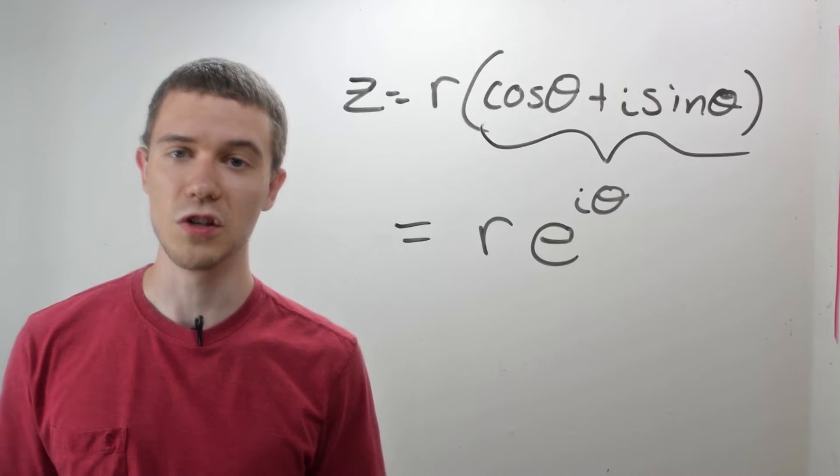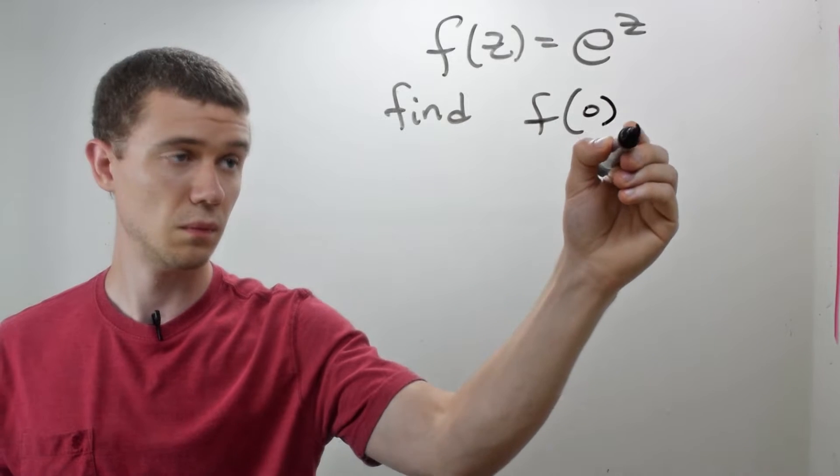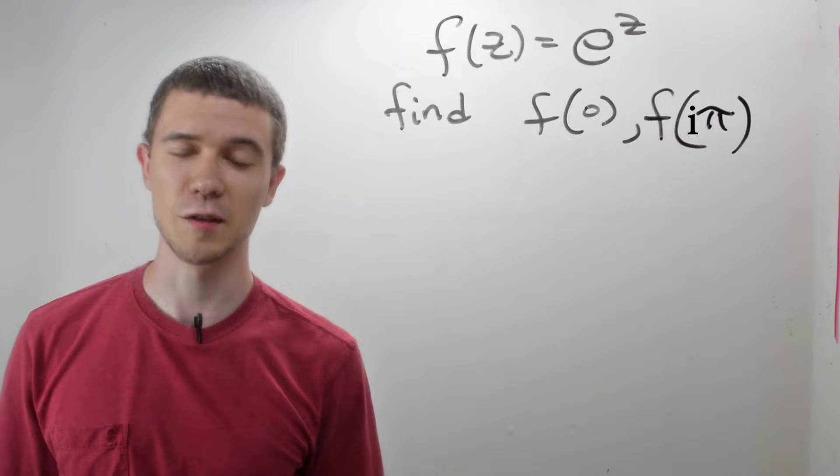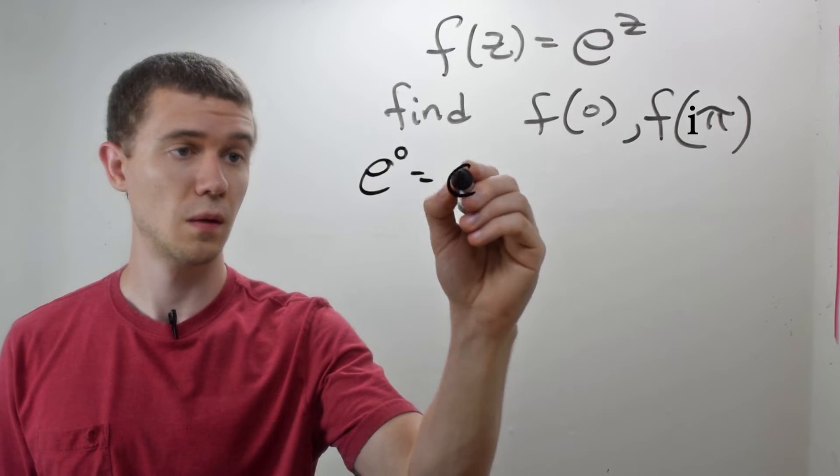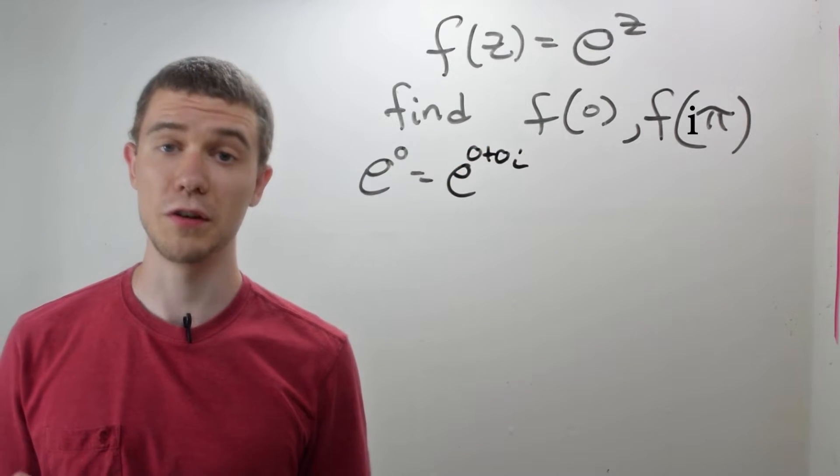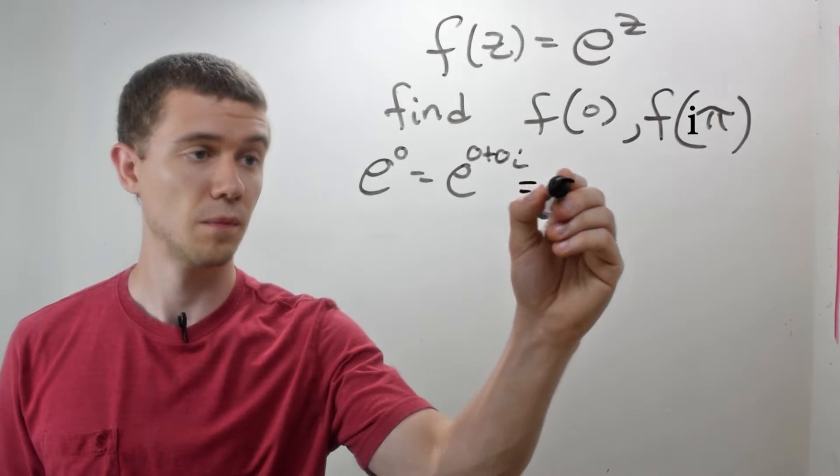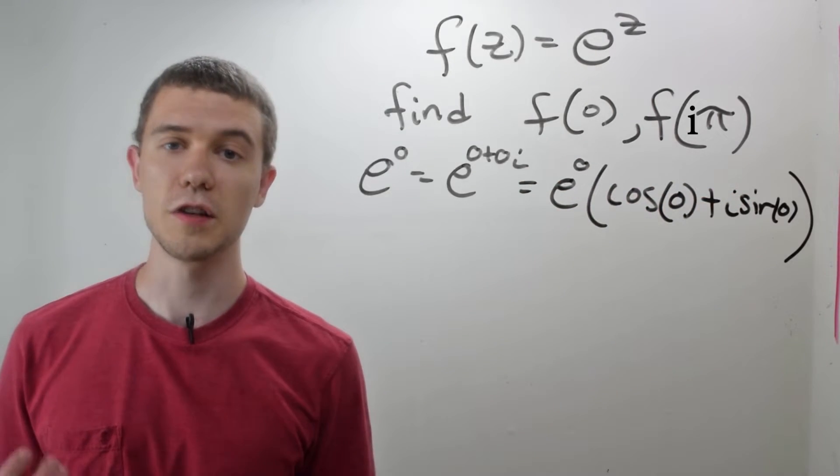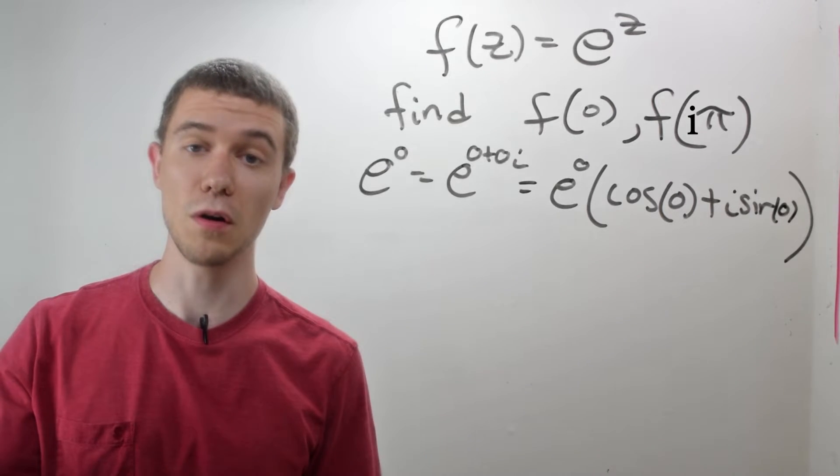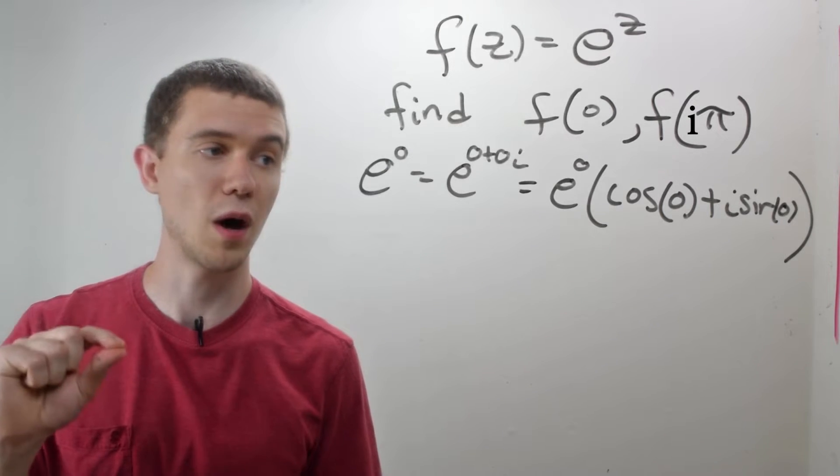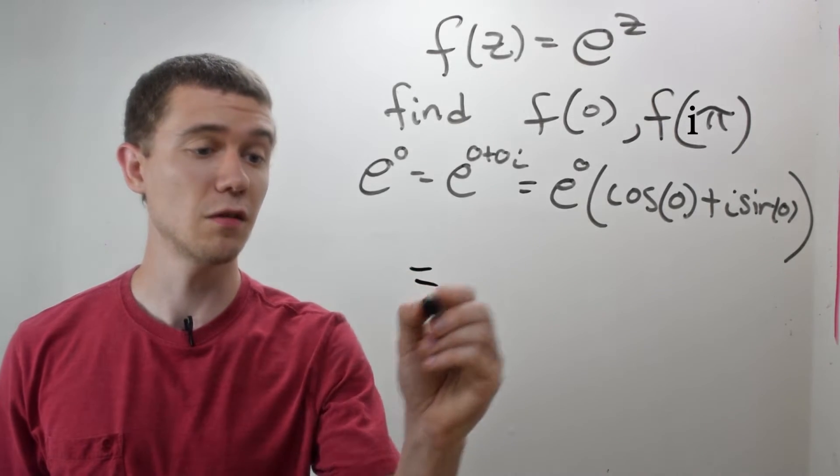Let's do some evaluation of the exponential function. Here I'm just going to evaluate the complex exponential function at a few points. So here 0, and I just remind you that 0 means 0 real part and 0 imaginary part. And then I just apply the definition of the exponential function, which is e to the real part, times cosine y plus i sine y, y being the imaginary part. In this case, they're both 0.